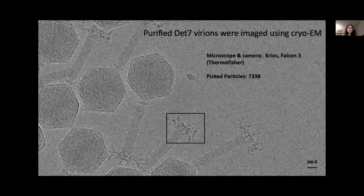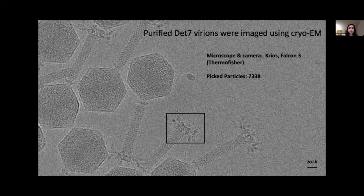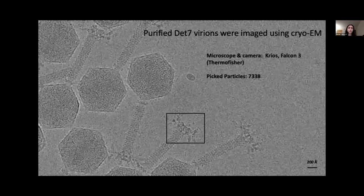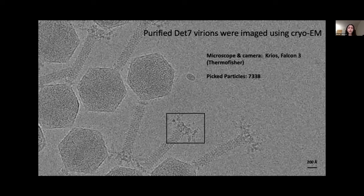First, we focused on the non-contracted state of DET7, where purified DET7 variants were imaged using cryogenic electron microscopy, in which a sample is flash-frozen and imaged under an electron microscope coupled to a direct electron camera. The resulting micrographs were processed, base plates were automatically picked through software EMAN2, and the picked particles were refined using RELION. Over 7,000 particles were included in the final reconstruction.